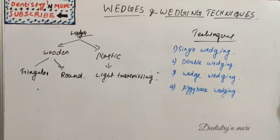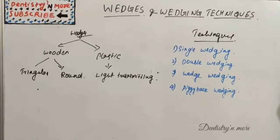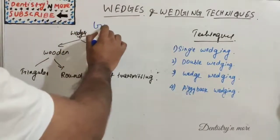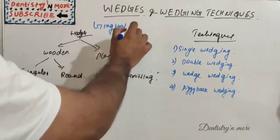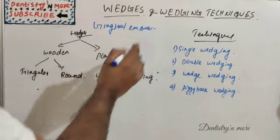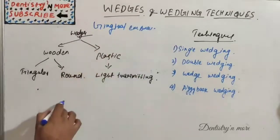Wedges are devices that create rapid separation during tooth preparation and restorations, and are placed in gingival embrasures. So we keep wedges in gingival embrasures.